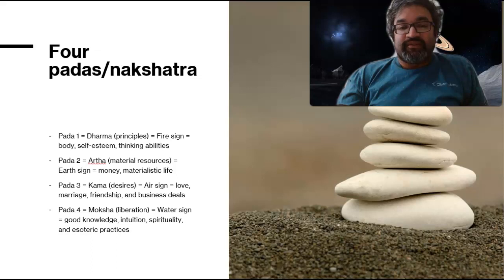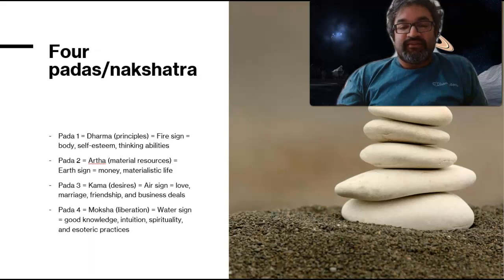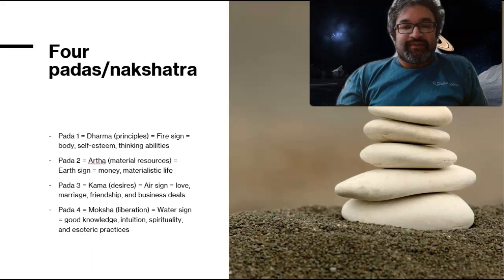As the story goes, there are 27 lunar mansions and the moon wanted to spend more time in one of the lunar mansions — one of his 27 wives — more than the others. Due to this, that individual gave him a curse that he would have to give up his light for the rest of the month when there is no full moon.